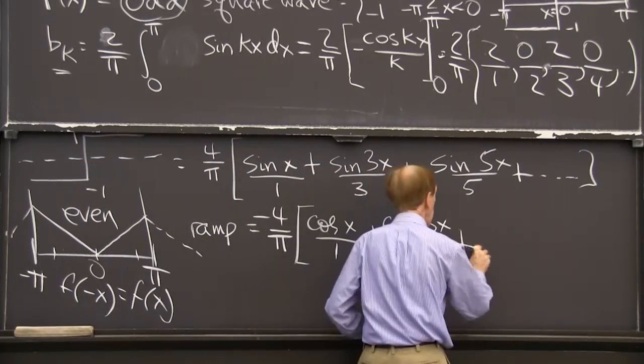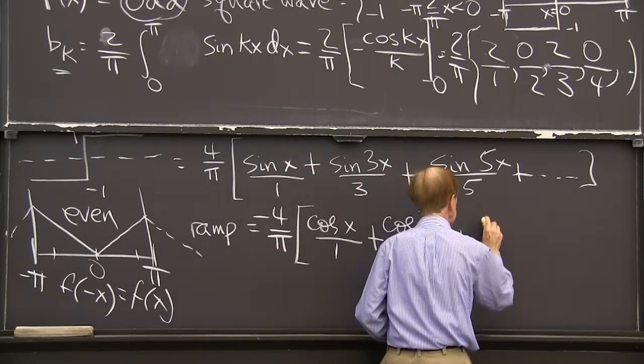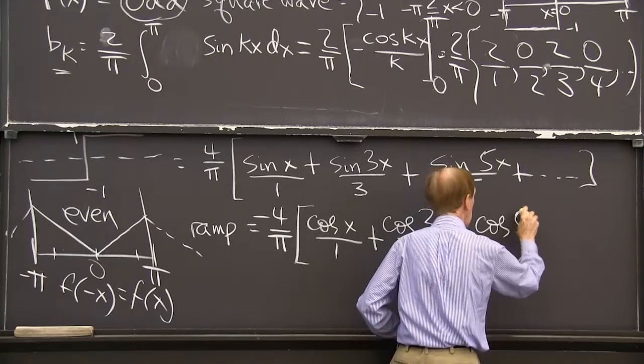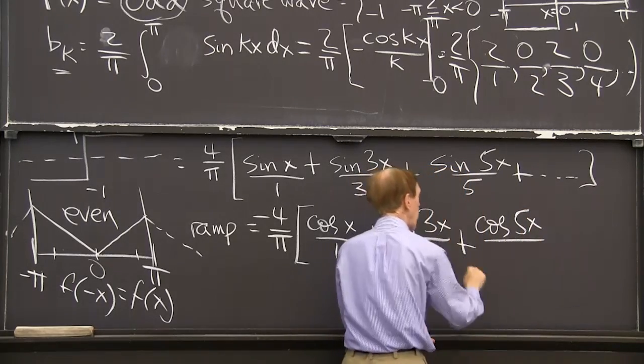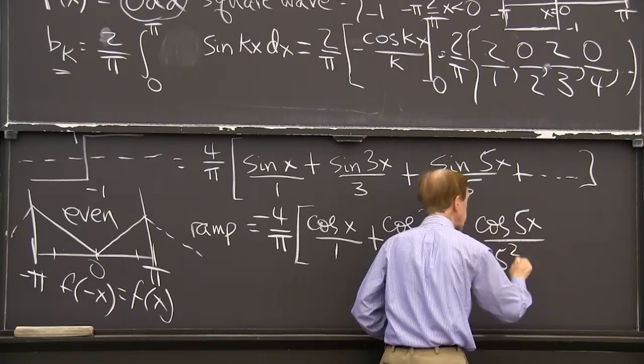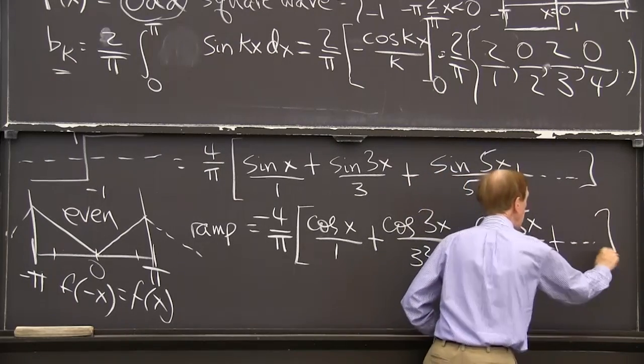And similarly here, when I integrate sine 5x, I get cos 5x with a 5. And then I already had 1, 5, so 5 squared. So there you go.